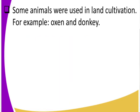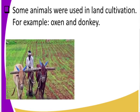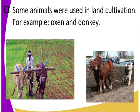Another use of these animals was that they were used in land cultivation. Many of us take part in agriculture and we use what we call the ox plough. The ox and donkey were used in cultivating and tilling the land. In the first image there is a person tilling the land using the ox-drawn plough, and the second image shows a donkey used in cultivating.